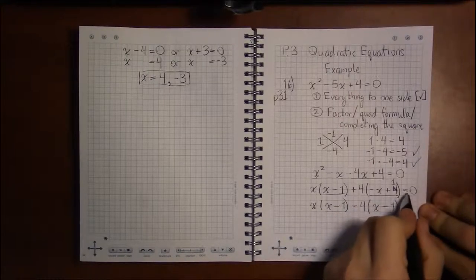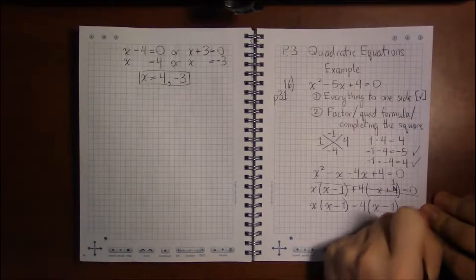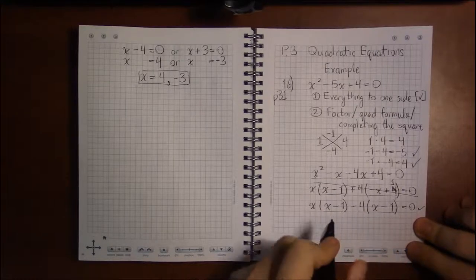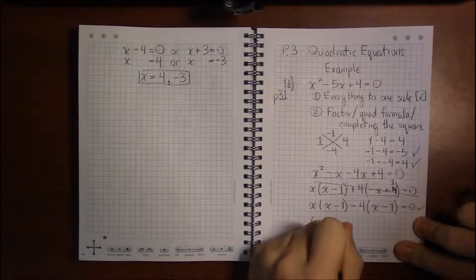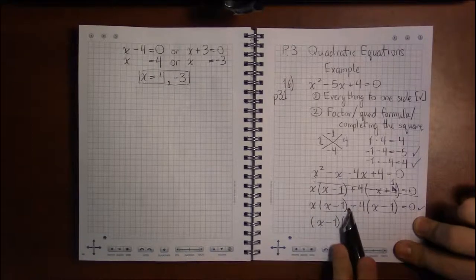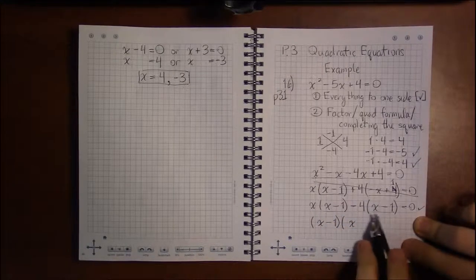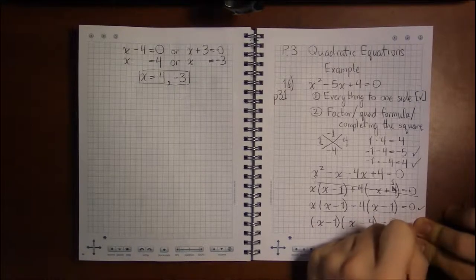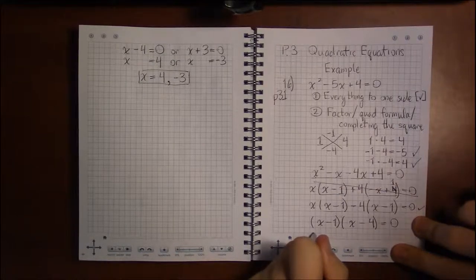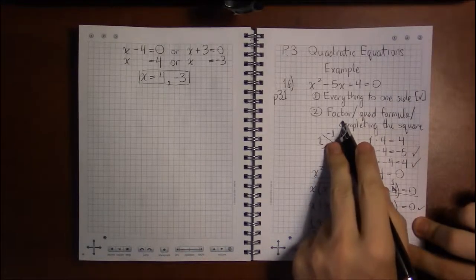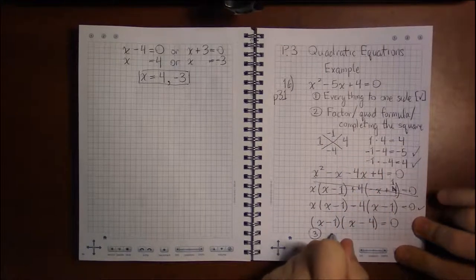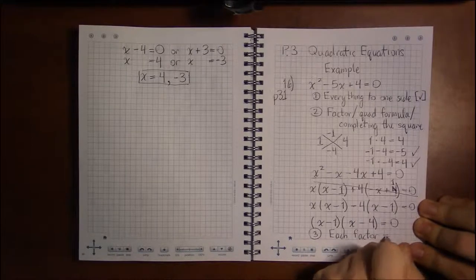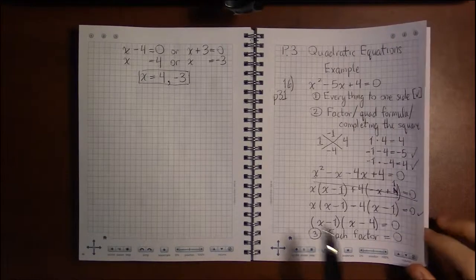Now the expressions in both parentheses are exactly the same — this is what we want. We can finish factoring by grouping: we have (x minus 1) in common with both terms. Ignoring the (x minus 1), the first term contributes x and the second contributes minus 4. So the completely factored form is (x minus 1)(x minus 4). Since it's factored, we set each factor equal to 0: x minus 1 equals 0 and x minus 4 equals 0.